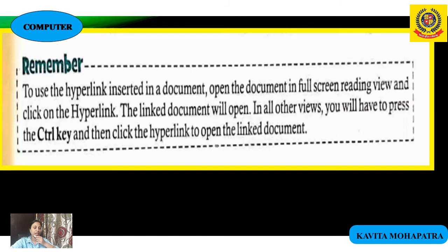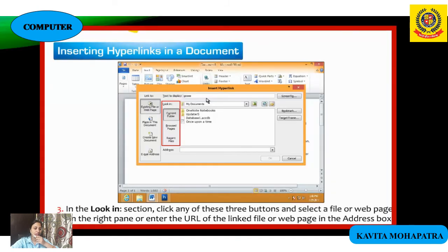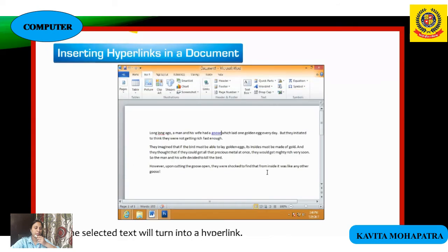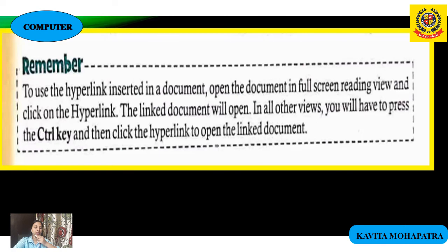In the 'Look in' section, click any of the three buttons — Current Folder, Recent Files, or Browse Pages — and select a file or web page from the right pane. Then enter the URL (Uniform Resource Locator), which is the address of the linked file or web page, in the address box.